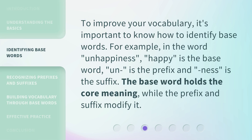To improve your vocabulary, it's important to know how to identify base words. For example, in the word "unhappiness," "happy" is the base word, "un" is the prefix, and "ness" is the suffix. The base word holds the core meaning, while the prefix and suffix modify it.